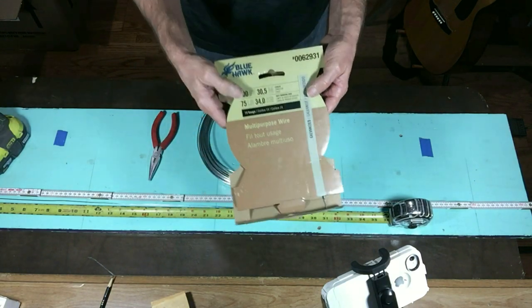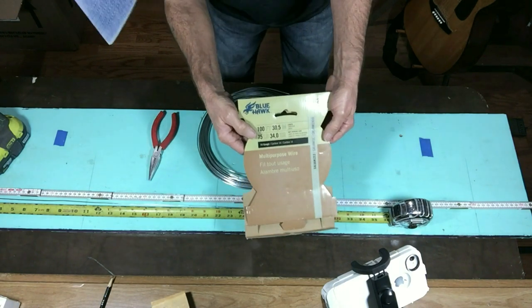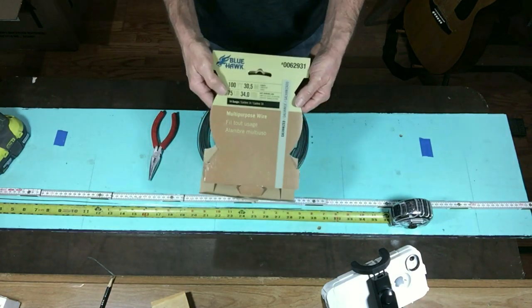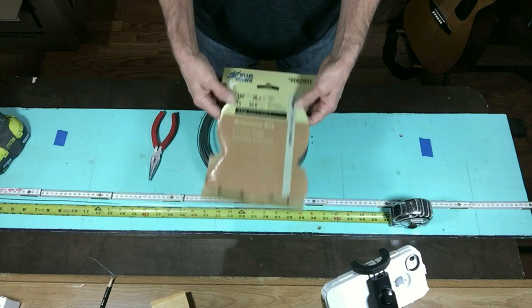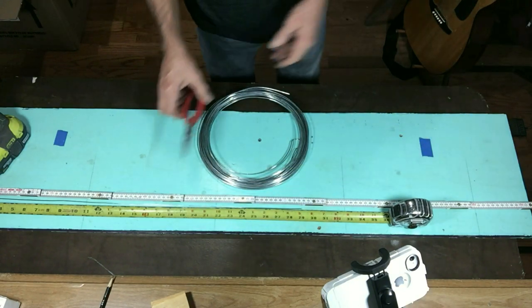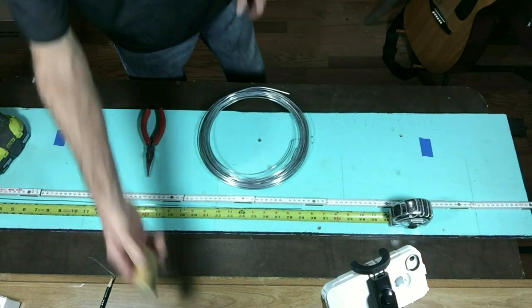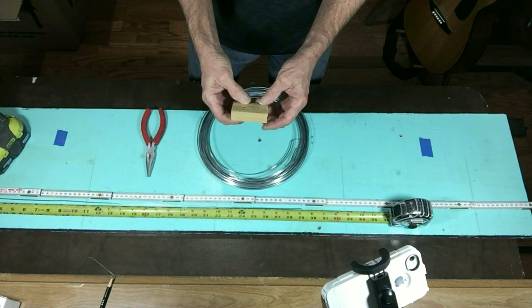For this antenna I'm using 14 gauge galvanized wire that I picked up from Lowe's, and you can use copper wire if you want. I would just suggest that you use a wire that's thin enough for you to bend it with needle nose pliers, as some of the galvanized wires are just too thick to bend.